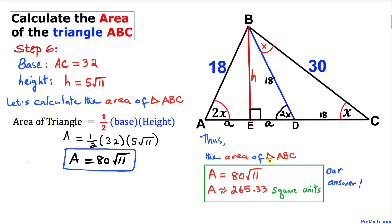The area of triangle ABC is 80√11, or approximately 265.33 square units. Thanks for watching — please don't forget to subscribe to my channel for more exciting videos!